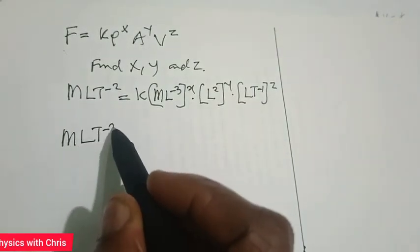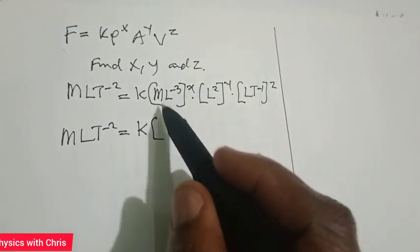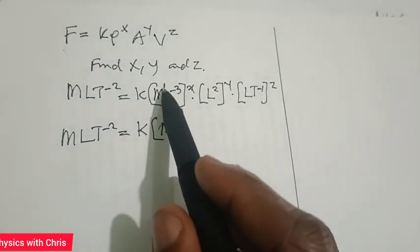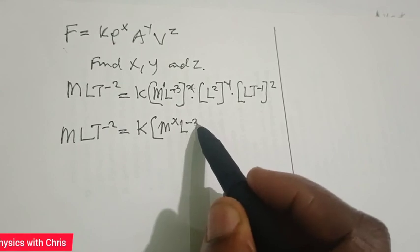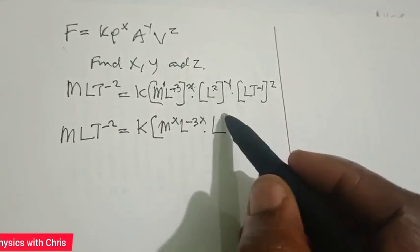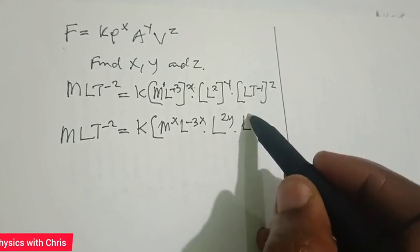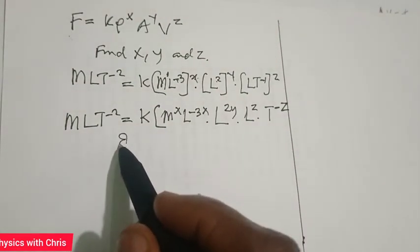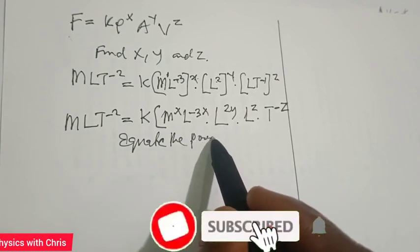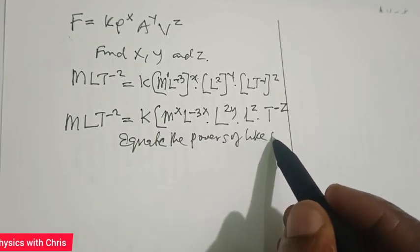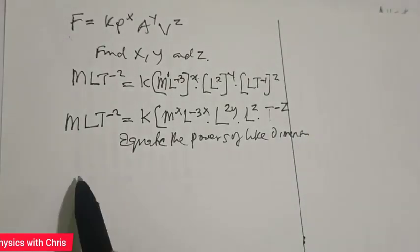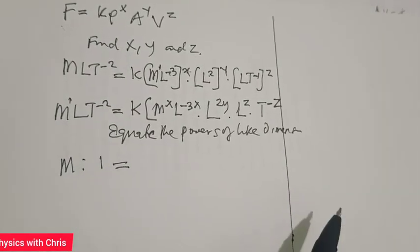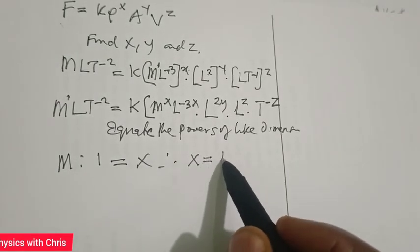Expanding using the powers, x affects the power of M giving M^x, −3 times x gives L^(−3x), 2 times y gives L^(2y), and z gives L^z and T^(−z). Now equating the powers of like dimensions: for M, the left-hand side power is 1, the right-hand side power is x, so x = 1.